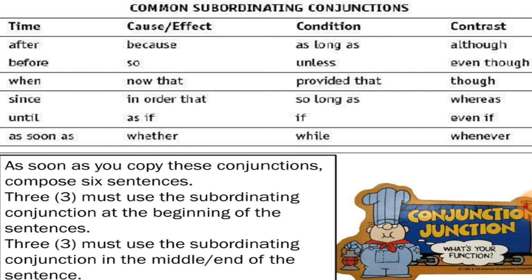Let us see more about subordinating conjunctions categorized by meaning. For time, we use: after, before, when, since, until, as soon as. For cause or effect: because, so, now that, in order that, as if, whether. For condition: as long as, unless, provided that, so long as, if, while. For contrast: although, even though, though, whereas, even if, whenever. You can see a list of subordinating conjunctions under the headings of time, cause and effect, condition, and contrast.